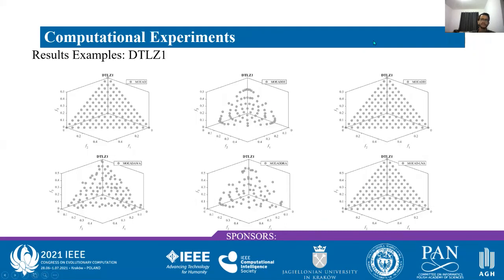I will show examples on the regular Pareto front DTLZ1 problem. In our studies, we understand that weight vector adaptation procedures often show lower performance on regular Pareto fronts. However, MOEA/D-LNA shows a really good approximation of the results of the original MOEA/D, with a well-distributed set of solutions.